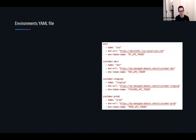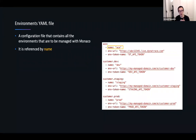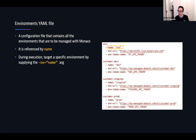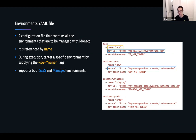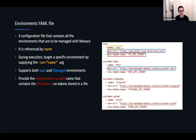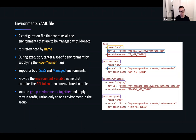In the environments file that lists all environments, you reference them by name — each environment gets a name, and when you run Monaco and want to apply a specific environment, that's the name you reference. It supports both SaaS and managed environments. You provide an environment variable name that contains the API token — do not store the API token directly in this file for security reasons. This makes it very easy to integrate with Jenkins or other platforms that have good secrets storage. You can also group environments together — dividing dev, staging, and production environments — and specify which group to apply for a given run.